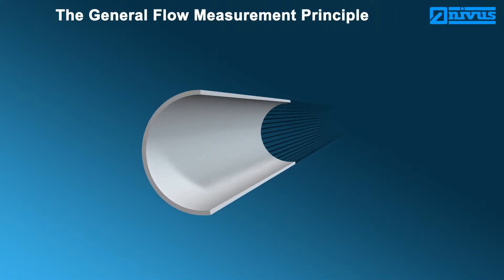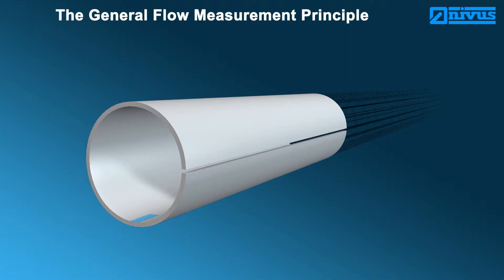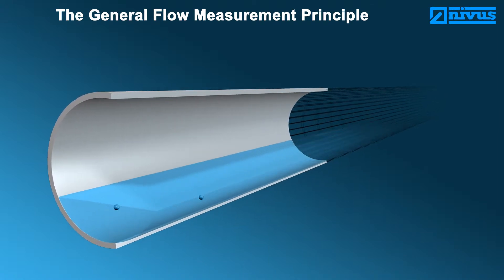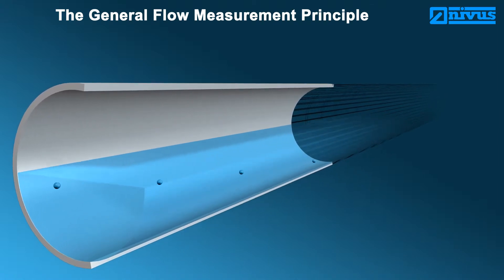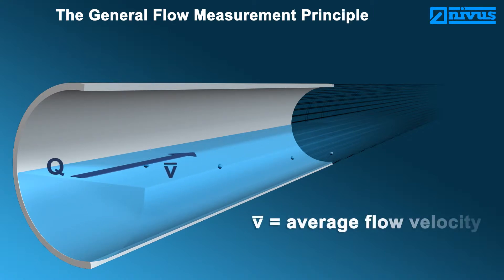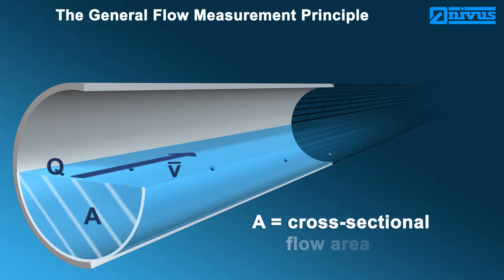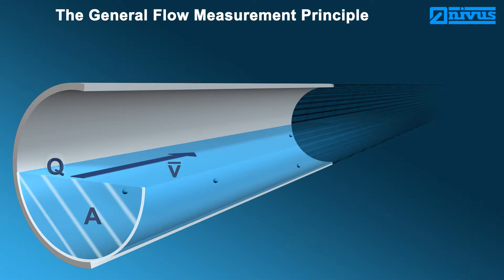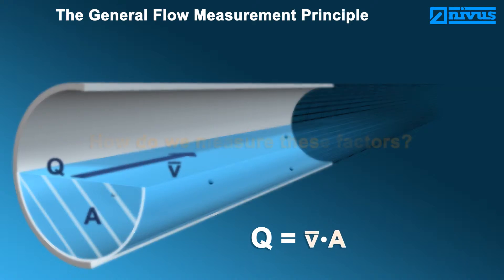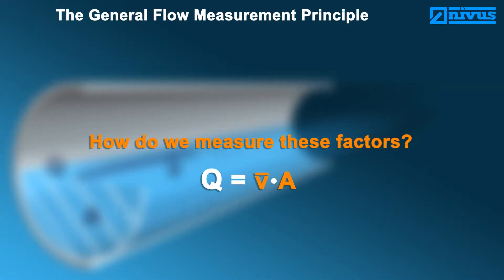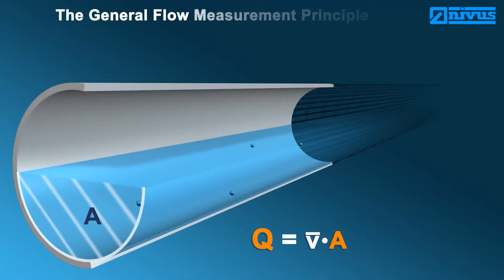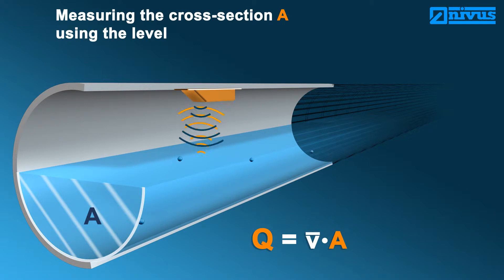The flow measurement principle. Flow cannot be measured directly. There are various factors required to detect the flow Q, such as the average flow velocity and the flow cross-section. From this, the general formula is obtained: Q equals V average times A. The flow cross-section A is determined by continuously measuring the level in consideration of the channel shape.